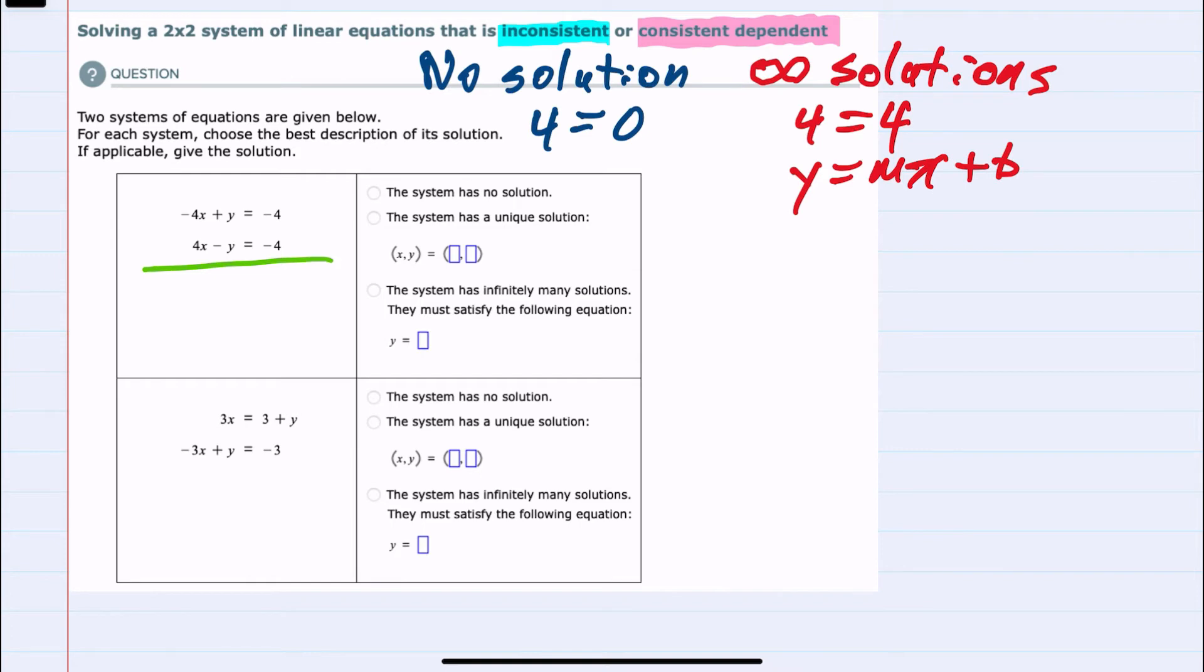The minus 4x plus 4x would cancel. The plus y minus y would cancel. That would be 0. And on the right-hand side, the minus 4 plus the minus 4, actually those don't cancel, but we get a minus 8. So we're ending up with 0 equals negative 8 whenever we attempt to solve, and since we're getting a statement that is not true, that means we have no solution. So our first system has no solution.